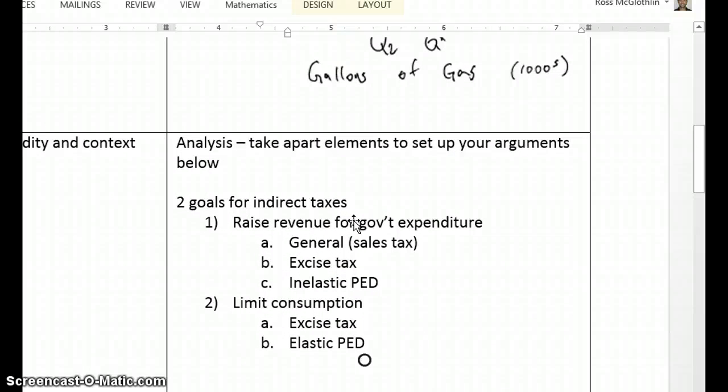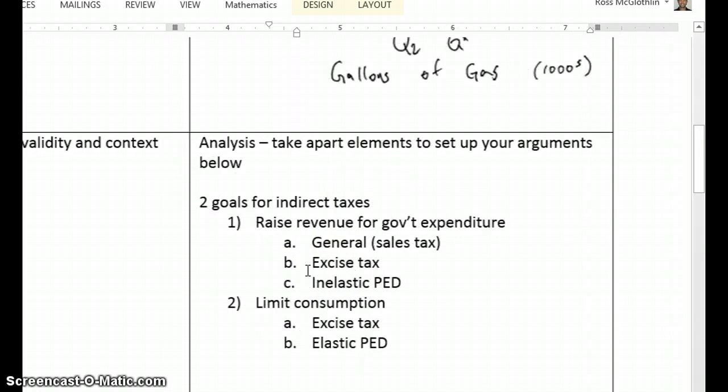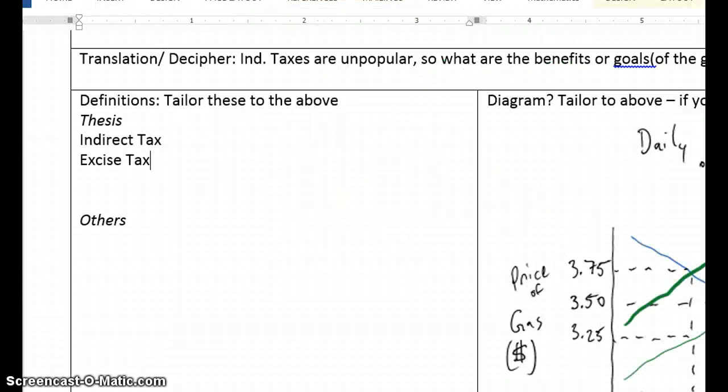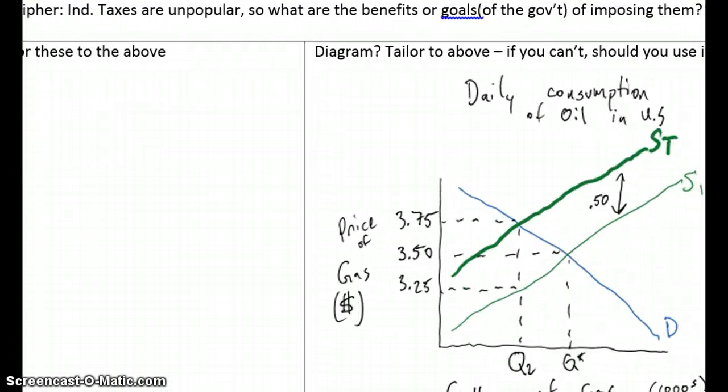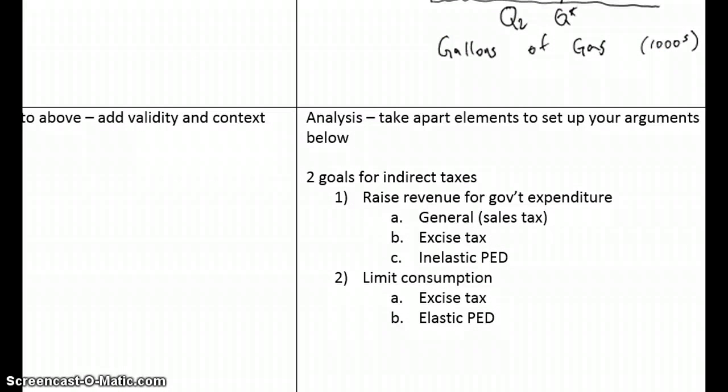I'm also going to talk about specifically an excise tax and how an excise tax is on a specific product like gasoline or alcohol or cigarettes or tires, for example. Now when I do that, this is a new term. So because that's a new term, I'm also going to put it over here with the definitions so that I remember, oh yeah, I should say what that is. Okay, coming back down to my analysis, the second goal, I'm going to need to talk about how if I'm trying to raise revenue, it's going to be more effective with products with inelastic PED because people won't buy that much less than it will be with products with very highly elastic PEDs.